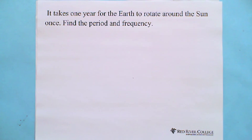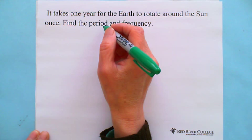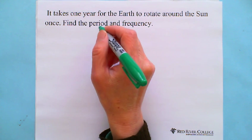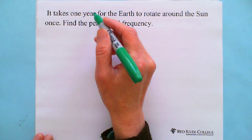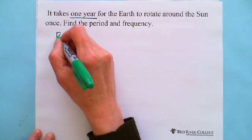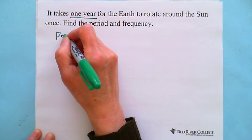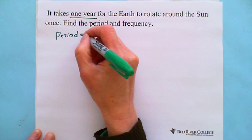It takes one year for the earth to rotate around the sun once. Find the period and frequency. The period, as we know, is the time for an object to complete one revolution. So it takes one year. This is the time. So the period is, in this question, one year.